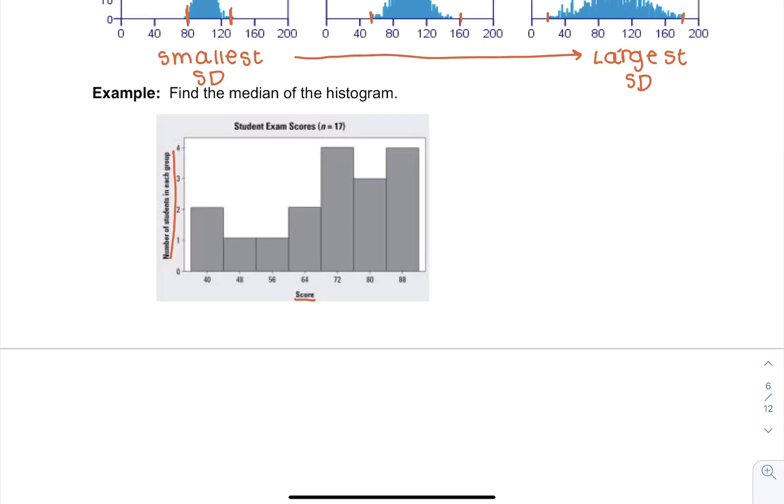So with histograms, we can't tell each individual point, but we can kind of make it up. So in this first category, this first bin, we have two scores in this 40 range, so it's probably from 36 to 44.